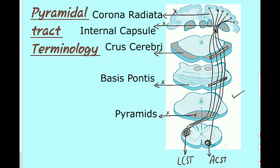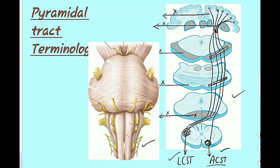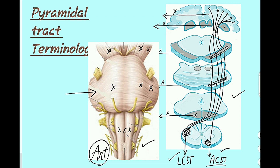So the pyramidal tract has different names in different regions. In the telencephalon it is the corona radiata; passing between thalamus and basal nuclei it is the internal capsule; in the midbrain it is the crus cerebri; in the pons it is the basis pontis; and in the medulla it is the pyramids. A diagram of the anterior aspect of the brainstem shows the crus cerebri, basis pontis, and medullary pyramids — the pyramidal tract is present on the anterior parts throughout midbrain, pons, and medulla.